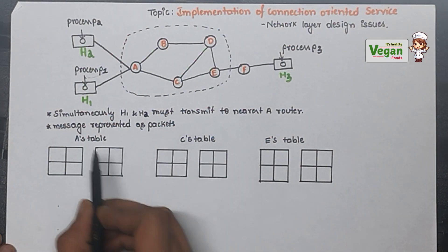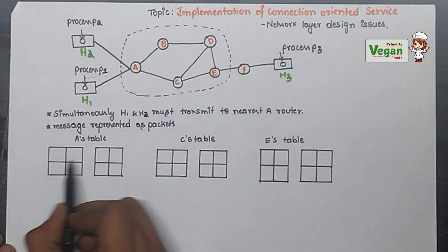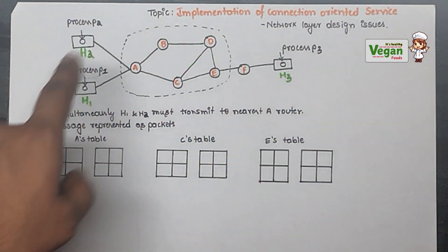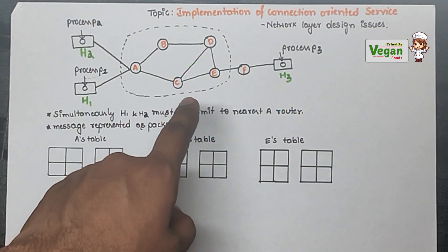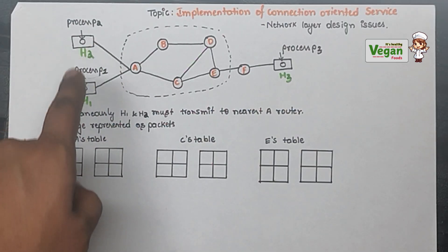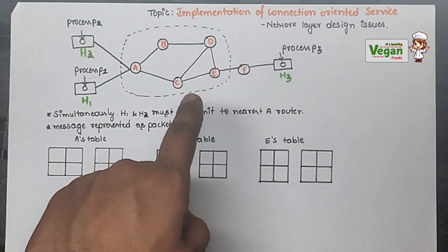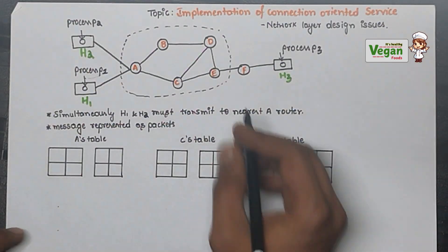While writing the routing table for Router A, we note where it is receiving the message from and where it is transferring it. It is receiving the message from H1 and H2, and it is transferring the message to Router C.